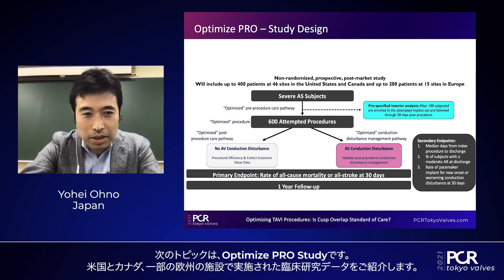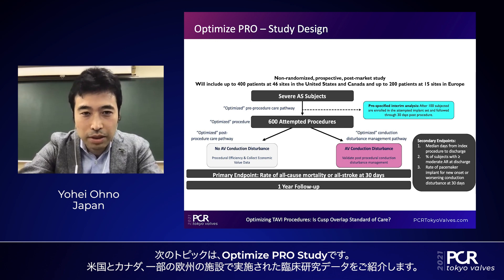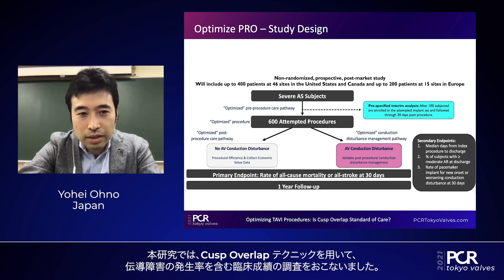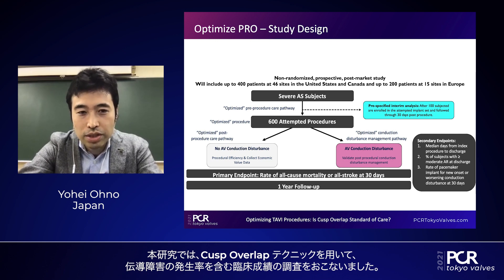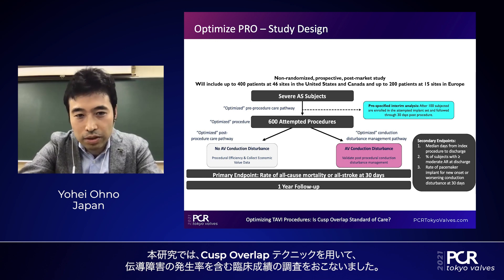Our next topic is the OPTIMIZE-PRO study, which was mainly performed in the United States, Canada, and some sites in Europe. This study uses the cusp overlap technique and investigates the incidence of conduction disturbance and its clinical outcomes.